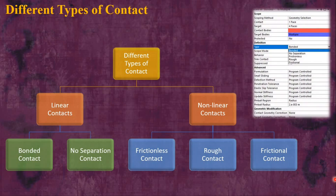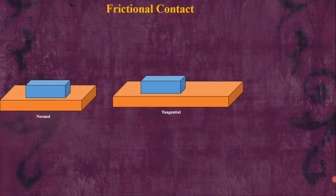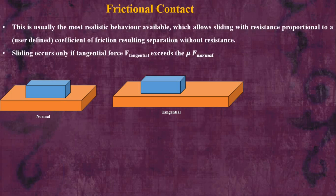The same definitions are found inside the details of a contact in ANSYS. Now let's discuss the first important contact definition — frictional contact. This is usually the most realistic behavior available for contact definitions.